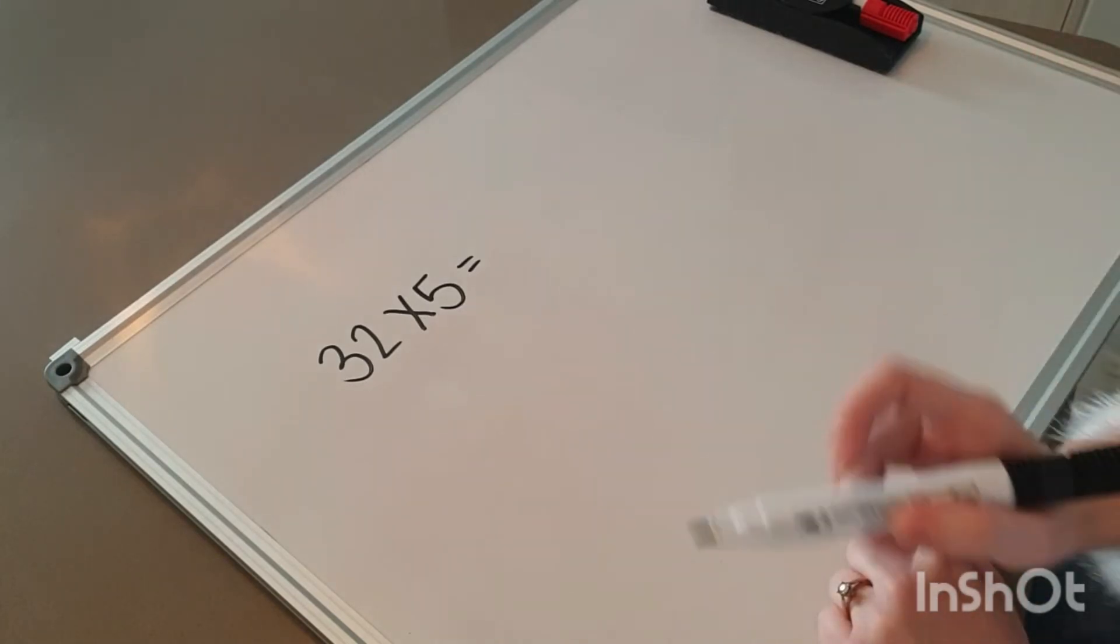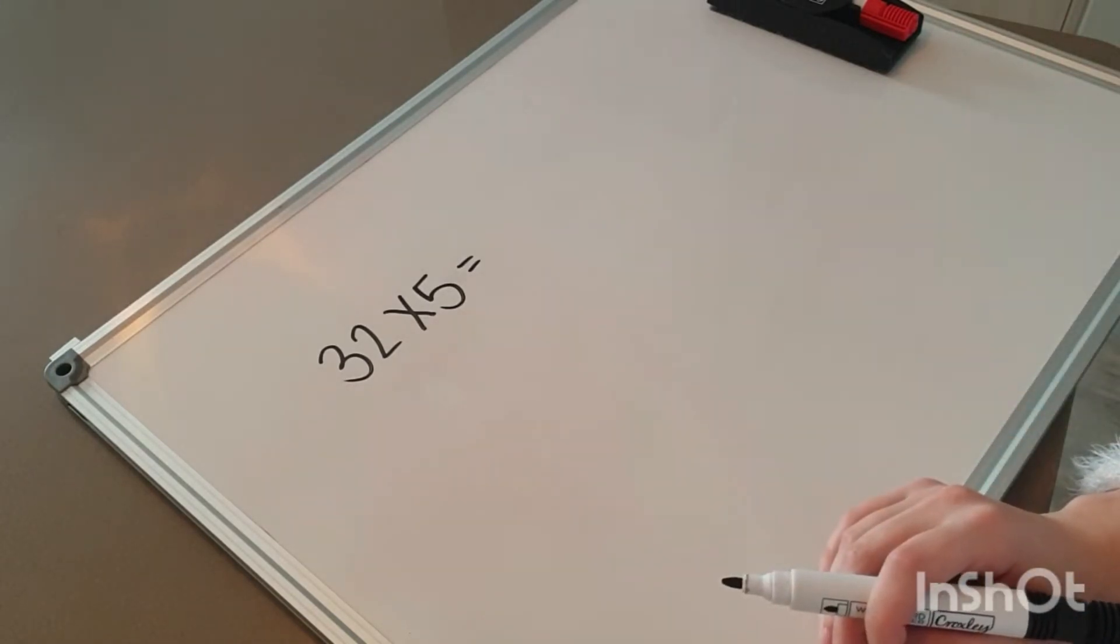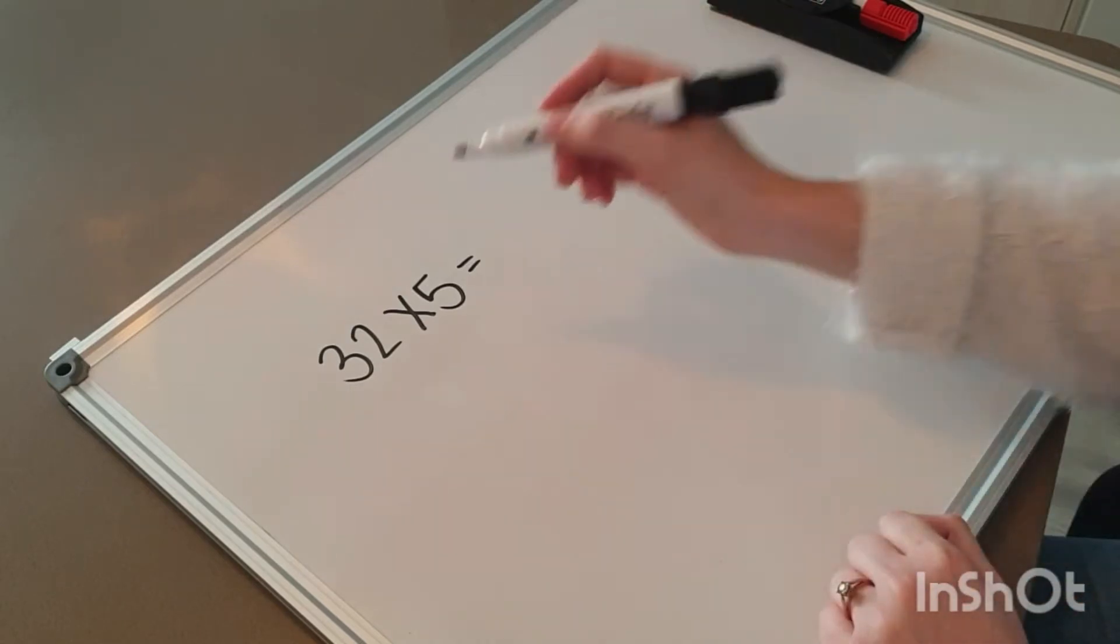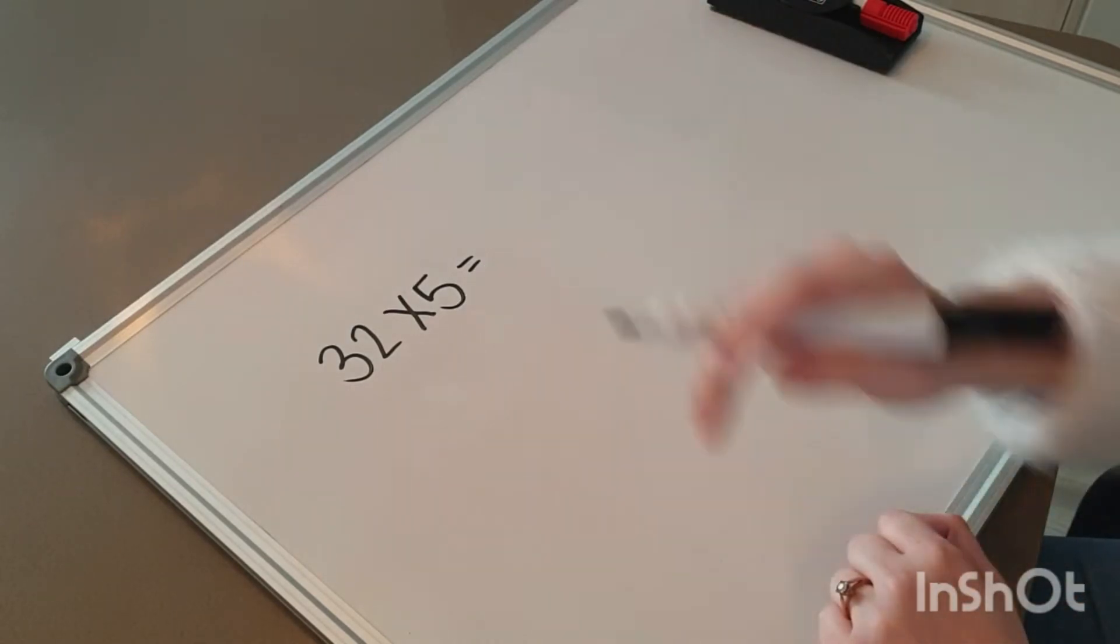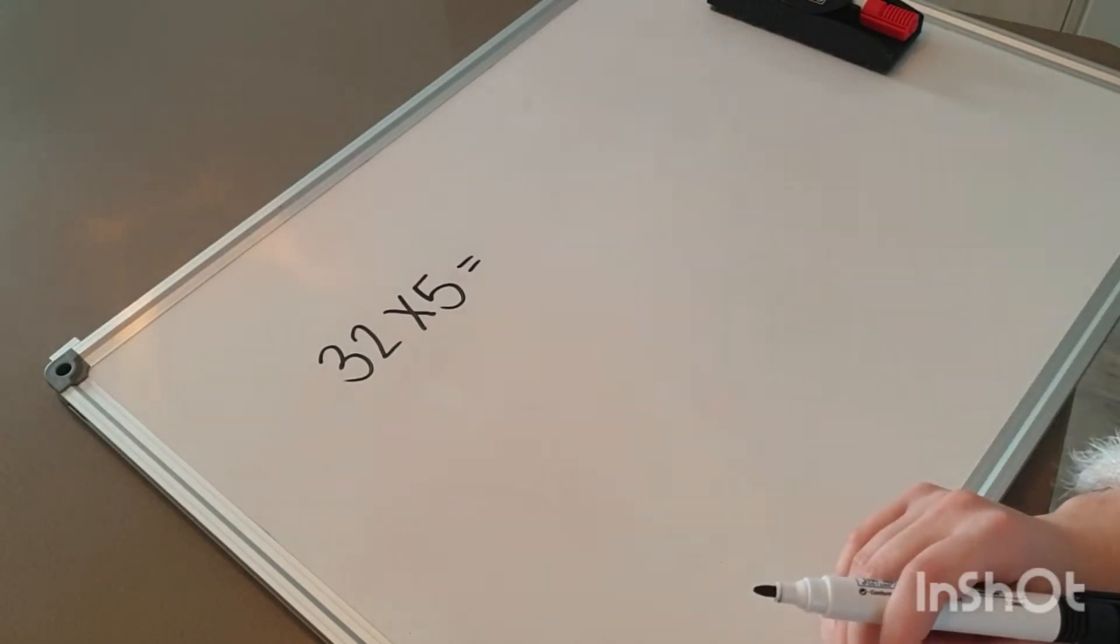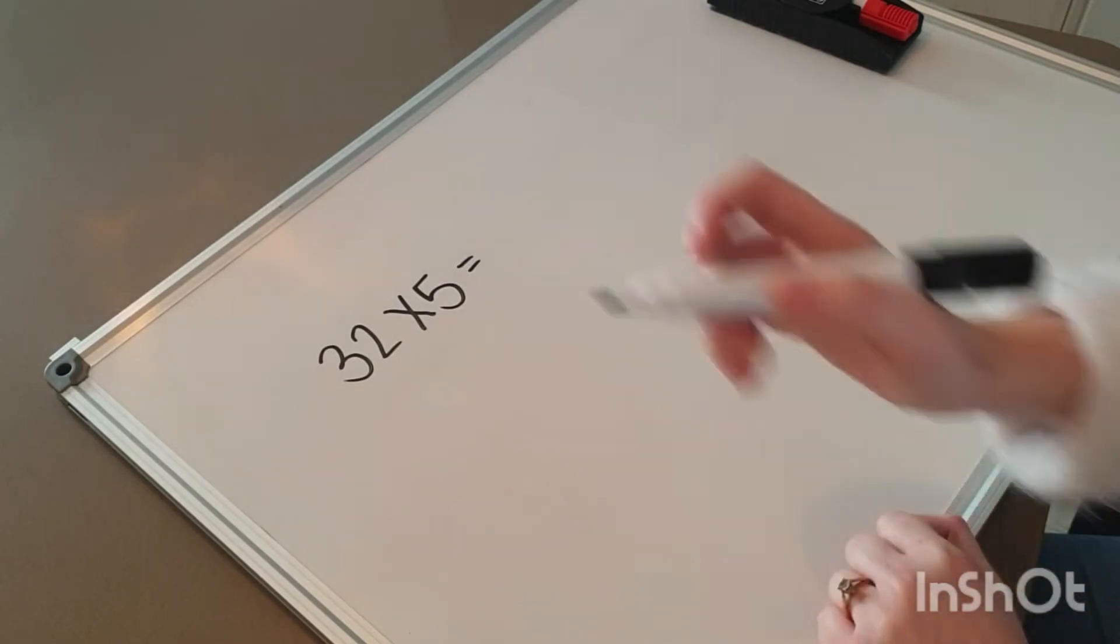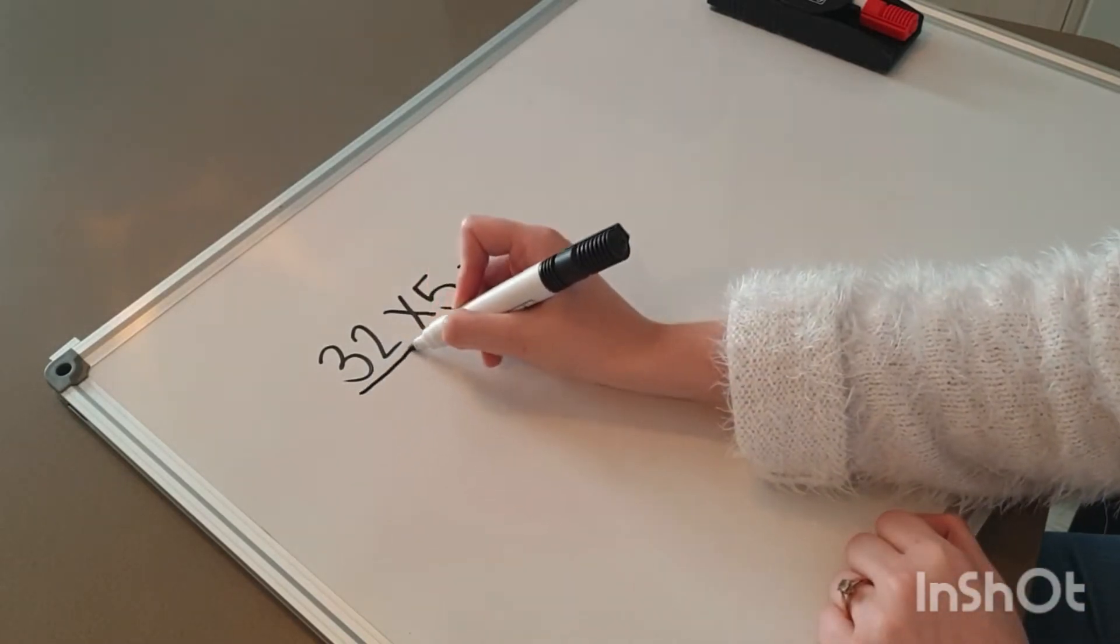Well, usually with all our other methods, when we did the plus and the minus, we decompose the second number. But when we do multiplication, we decompose the first number.